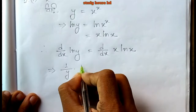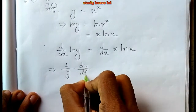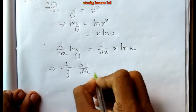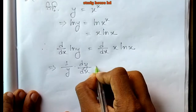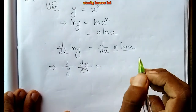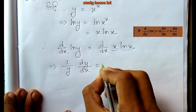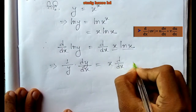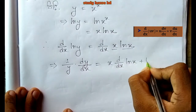If y equals x to the power x, then dy/dx equals y times d/dx of x ln x. Since y equals x to the power x, we substitute back.